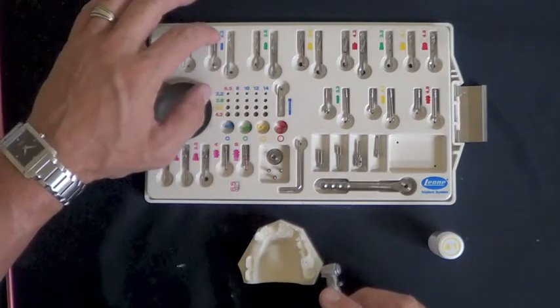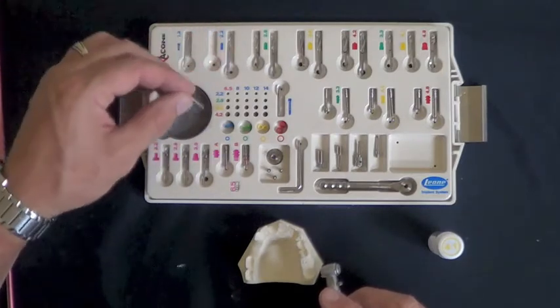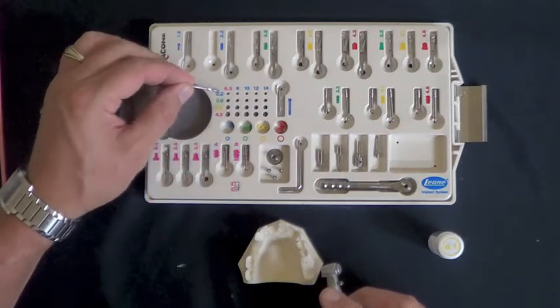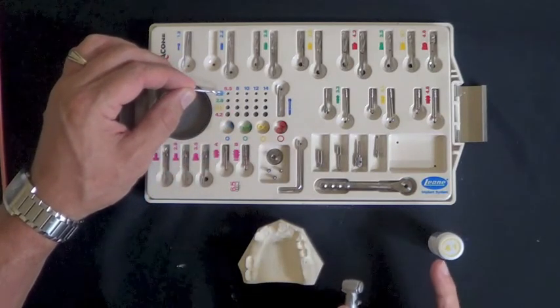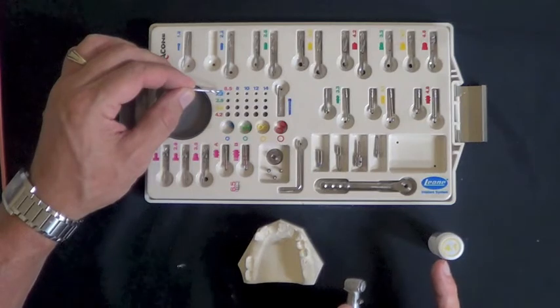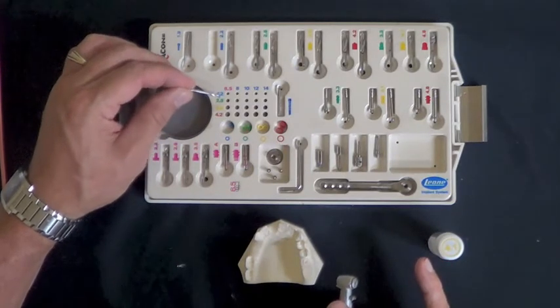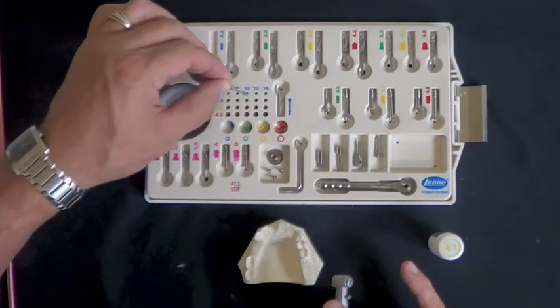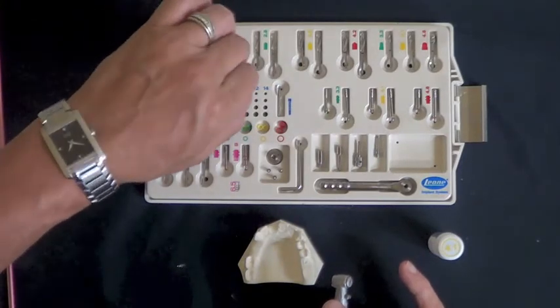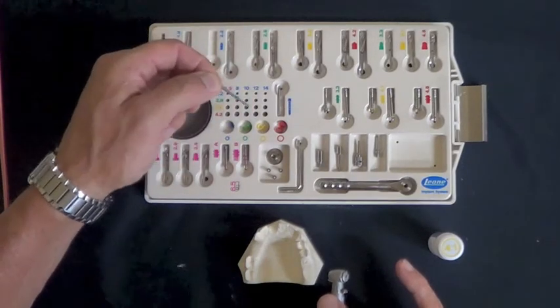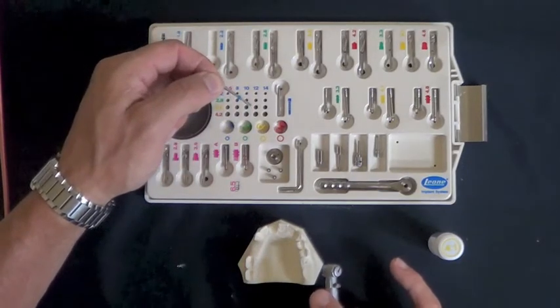Following the round burr, generally we would use the pilot drill, the 2.2 drill, and place a ringlet on the 2.2 drill. The implant that we're going to plan to place in this model is 4.1 millimeters in diameter by 10 millimeters long. So after placing a ringlet on the pilot drill, we would put it in the 10 millimeter length. That would give us our depth that we'd want to drill into the osteotomy site.